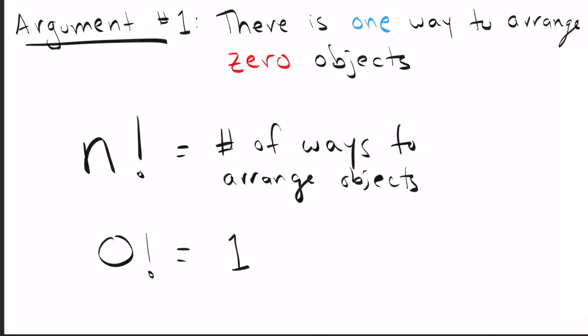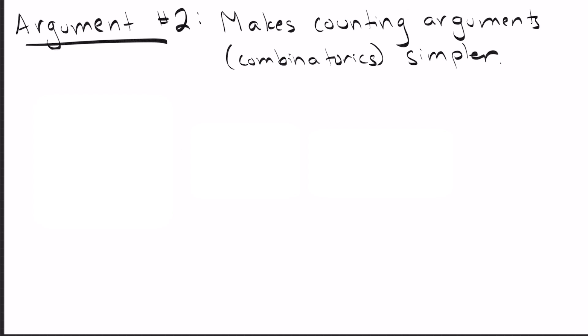Let's look at argument 2, which tries to do a better job with that. Argument 2 says the important thing about defining 0 factorial is that it makes counting arguments, which is also called combinatorics, simpler to do. So let's look at an example of this. If you have n objects and you want to figure out how many ways you can choose k of them.